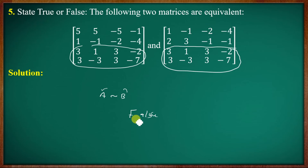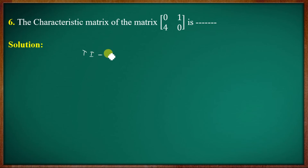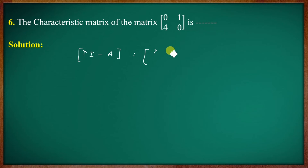Sixth question: find the characteristic matrix of the matrix [0, 1; 4, 6]. The characteristic matrix is given by λI - A. So λI - A gives: [λ-0, -1; -4, λ-6], which is the characteristic matrix formula.